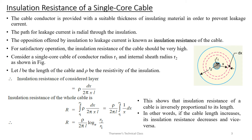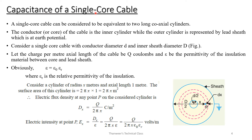Capacitance of a single core cable: a single core cable can be considered equivalent to two long coaxial cylinders. The inner cylinder is the conductor or core of the cable, while the outer cylinder is represented by the lead sheath. The conductor diameter is d, inner radius d/2, and outer sheath diameter is D, outer radius D/2. Let Q be the charge per meter length of the cable, and epsilon be the permittivity of the insulation material, where epsilon equals epsilon_0 times epsilon_r, and epsilon_r is the relative permittivity of the insulation.